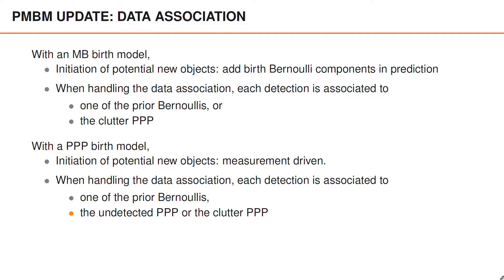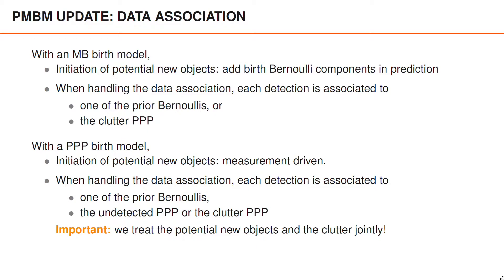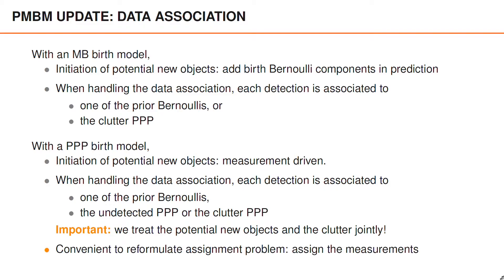This simultaneously represents the event that the measurement is clutter and the event that the measurement is associated to an object that had not been detected before, in which case it is a potential new detected object. Quite importantly, we treat the potential new object and the clutter jointly. Because of this, it is convenient to reformulate the assignment problem slightly such that we assign measurements, as opposed to assigning objects as we have done before. Let's say that there are m_k measurements and n_k objects.